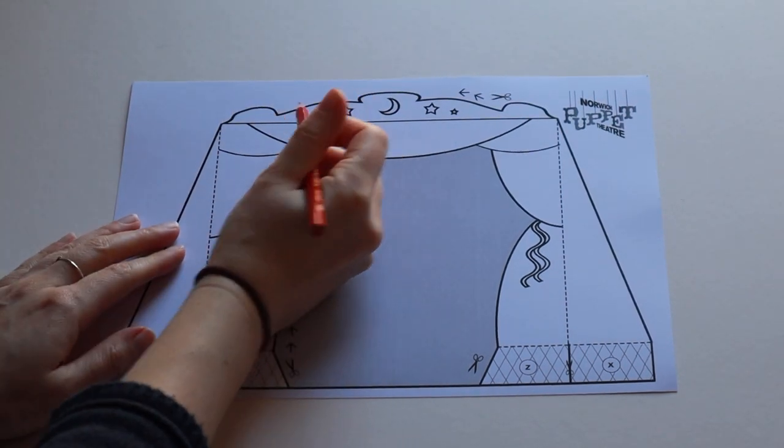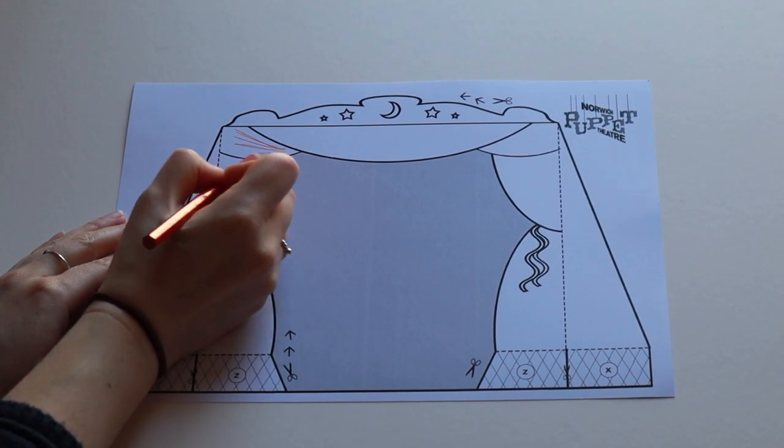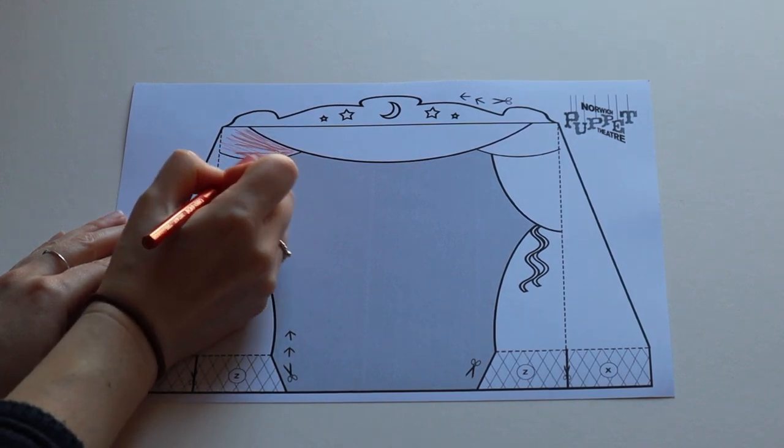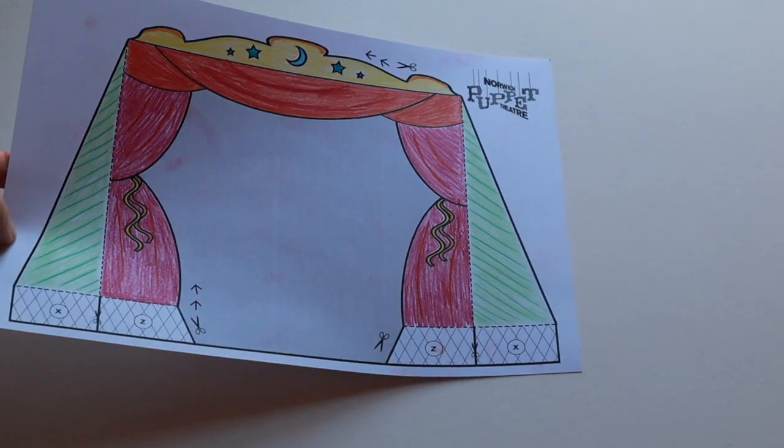For my example I'm just going to use coloring pencils, but you can use felt tip pens or collage or paint if you prefer. Don't worry about decorating the central grey area or the boxes at the bottom with hash marks.